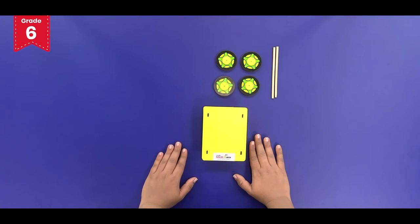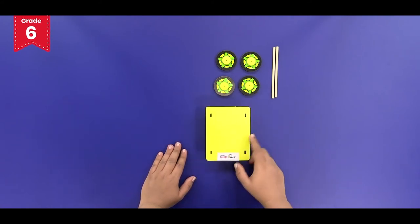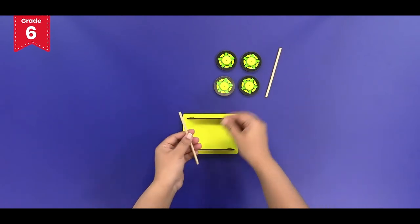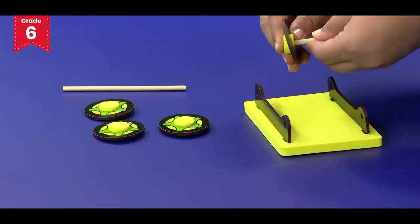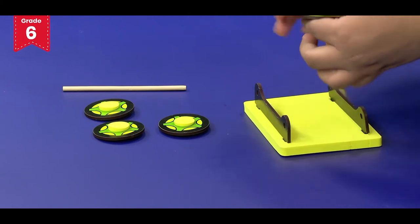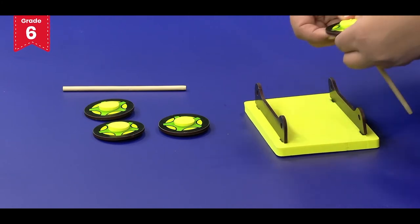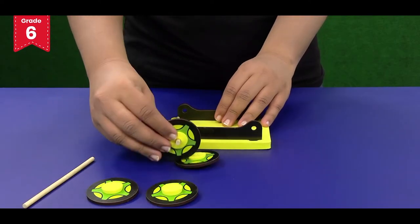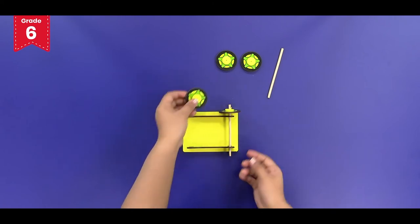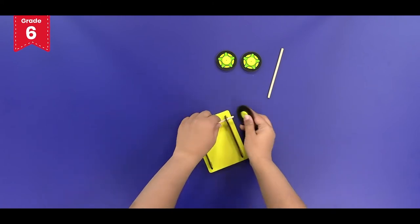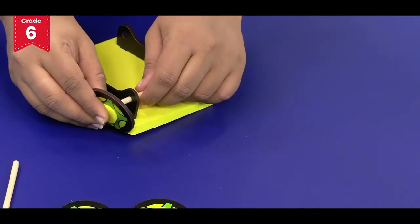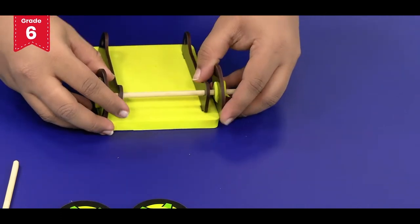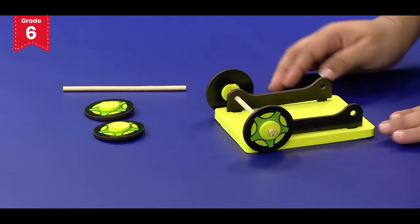Now we have to mount these wheels on the balloon car body. First of all take one axle, pass it through one of the wheels into the hole in the foam washer, then into the axle holder and then mount the other wheel in the similar way. Now repeat the same for the rear wheels.